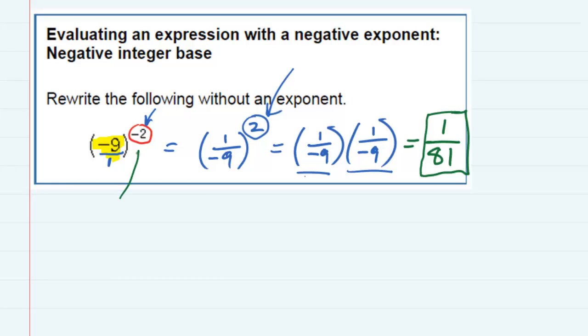I got rid of the negative exponent by flipping the fraction, and I had to put that 1 in at the bottom in order to turn it into a fraction, but then getting rid of the positive exponent it was just a matter of multiplying the base with itself.